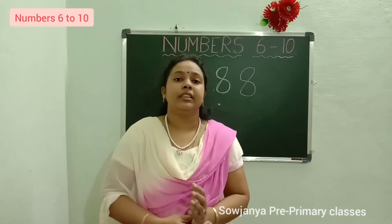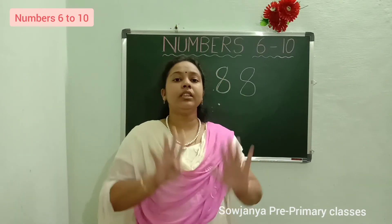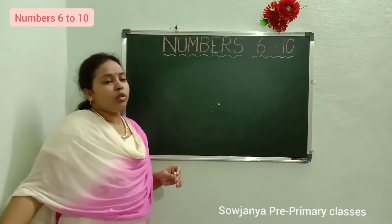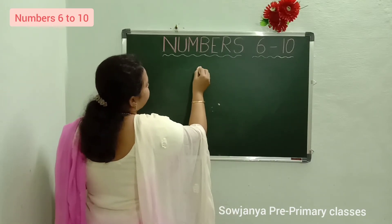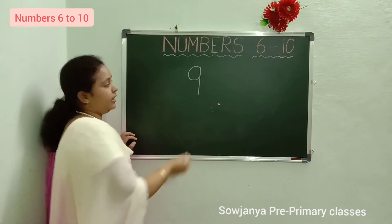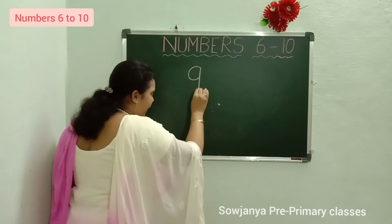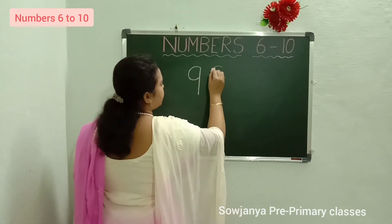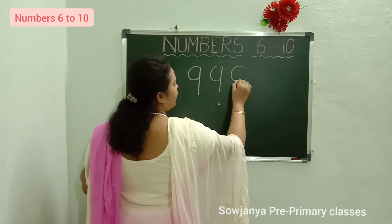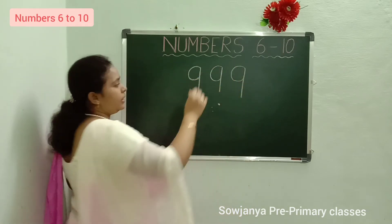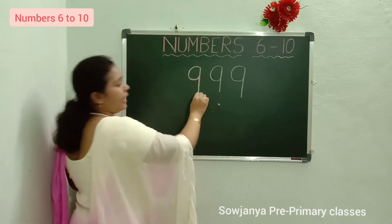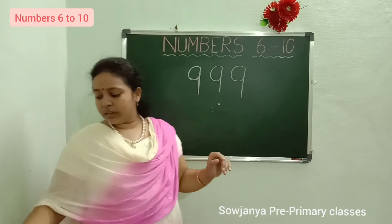8 after? 9. We will write 9. Now how to write 9? Put a circle first, and a standing line. 9. Put a circle and standing line. 9. How to write 9? Write a circle and standing line. 9. What is this number? 9.